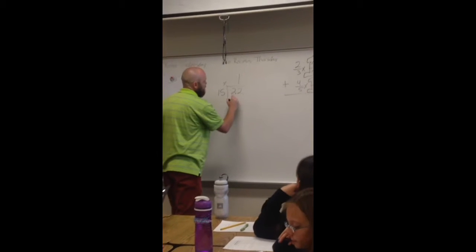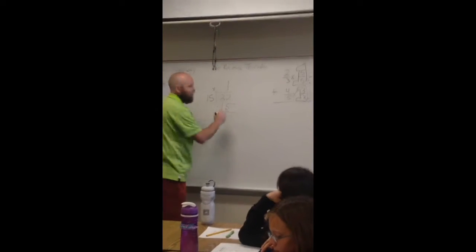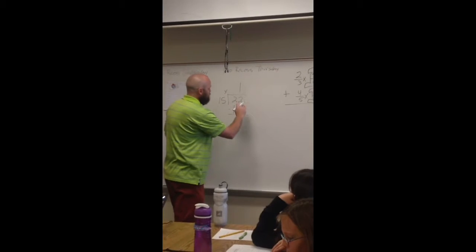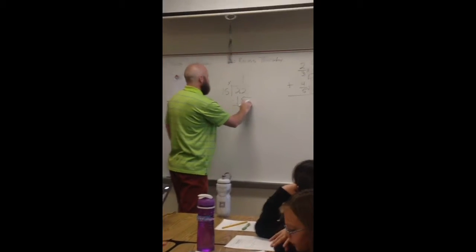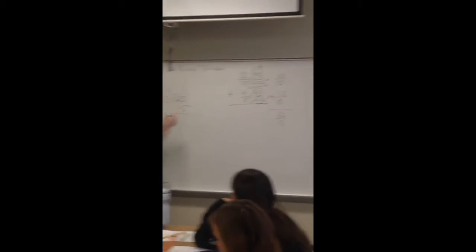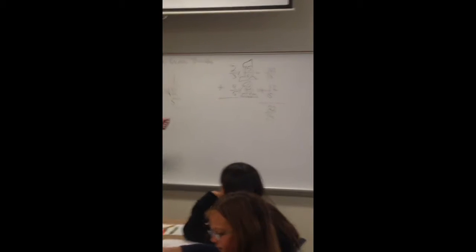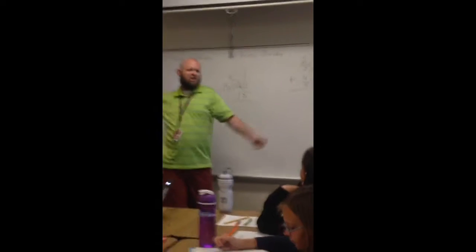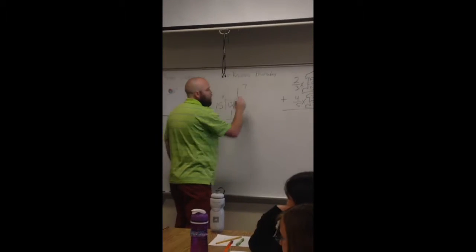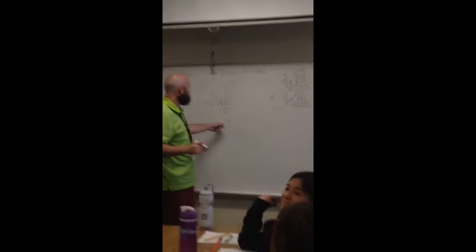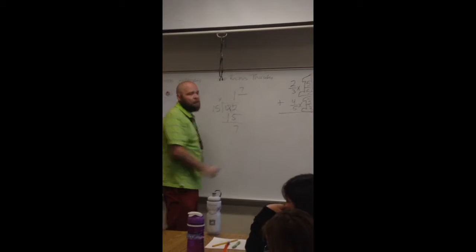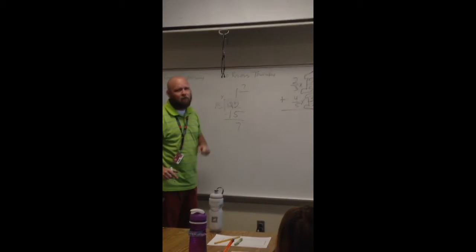15 goes into 22 one time. I multiply 1 times 15 and I put it down here. I'm going to subtract 22 minus 15. I need to borrow — 12 minus 5 is 7. Meaning, when I subtract and I have nothing else to bring down, that makes my numerator 7.